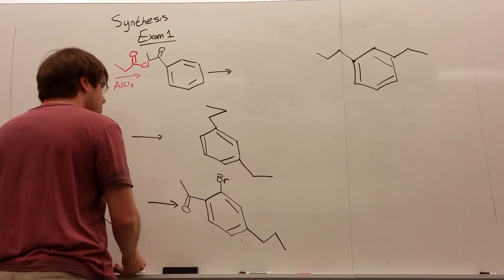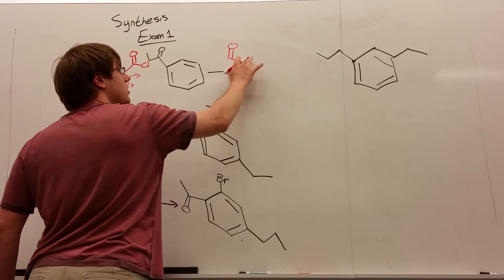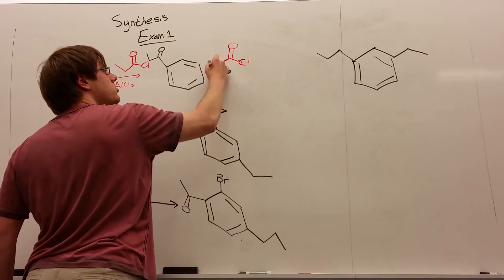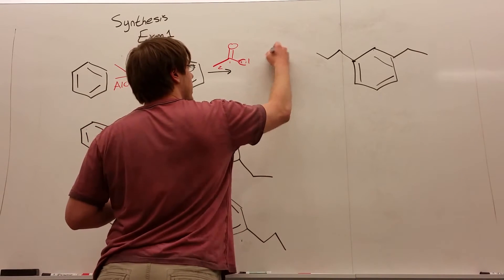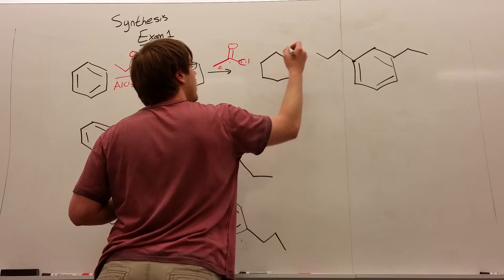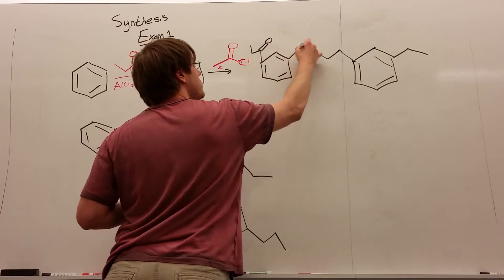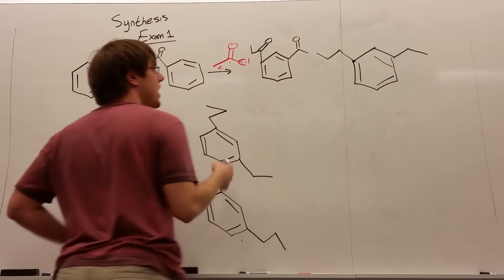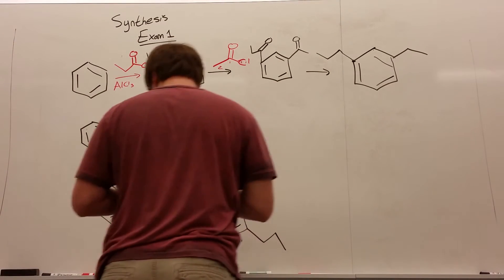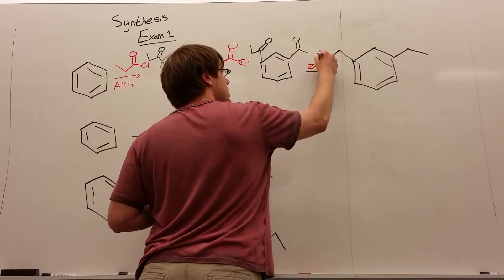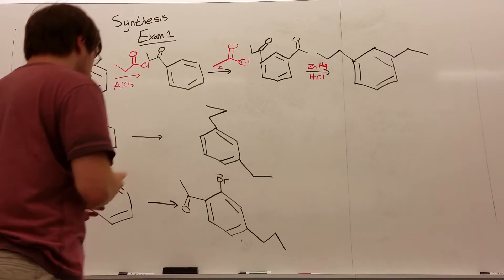So I want to keep that double bond O there for now and use this reaction again to add the two carbons on the right. This time I want to add two carbons, so: double bond O, Cl, one carbon, two carbons, with AlCl3. That gives me a ring with three carbons and double bond O on one side, and two carbons and double bond O on the other. Now I just need a reaction that gets rid of those two double bond O's — that is ZnHg with HCl. That's how you do the first synthesis.